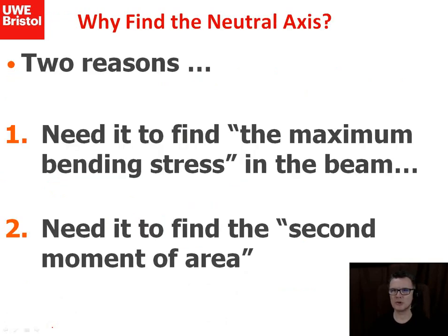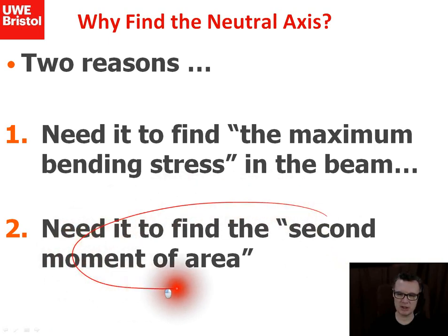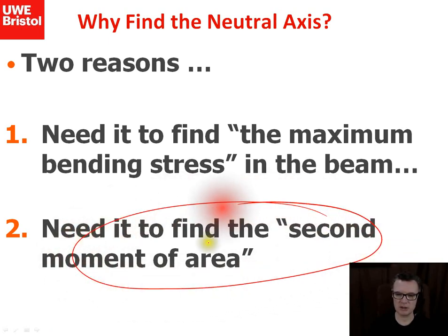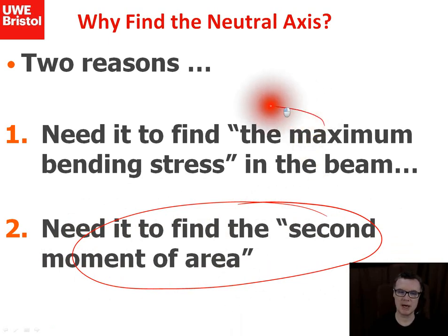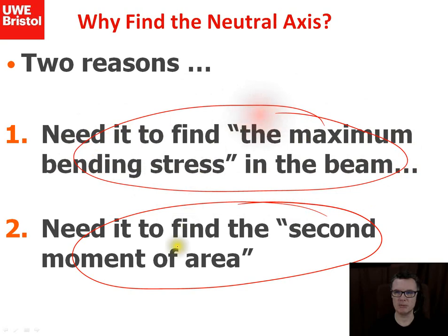Starting with the neutral axis - this is the centroid you've already calculated. It turns out that the neutral axis and the centroid are one and the same thing. The neutral axis is required for two things: helping us do calculations for the second moment of area, and later finding where the maximum bending stress in the beam is going to be.